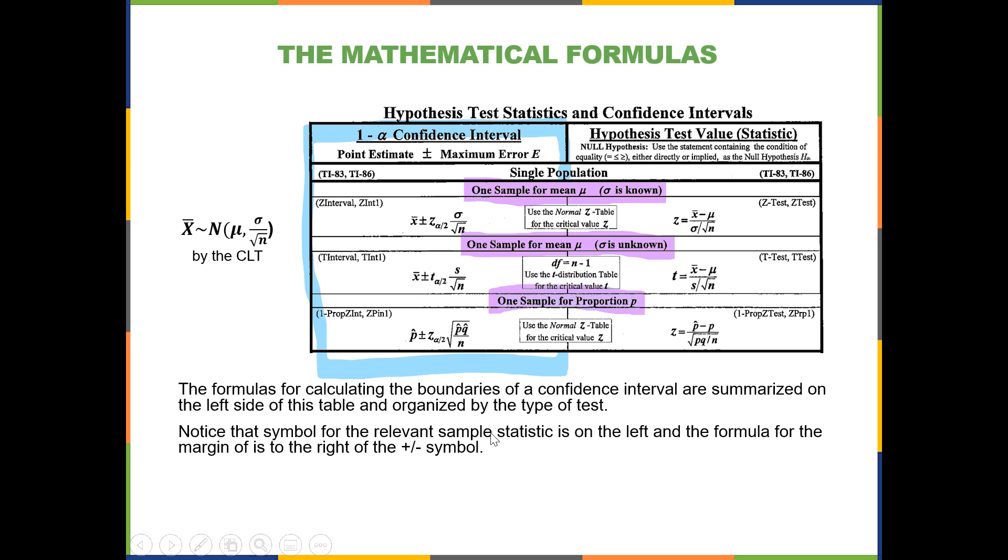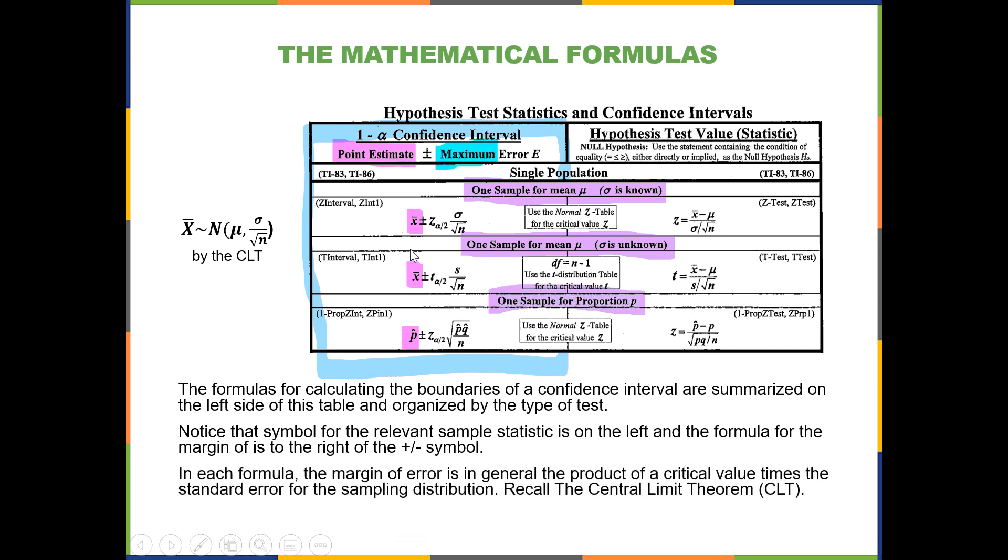Notice that the symbol for the relevant sample statistic is on the left of the plus minus symbol here. So the sample mean for estimating a population mean, or starting with the sample proportion for estimating a population proportion.